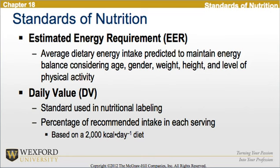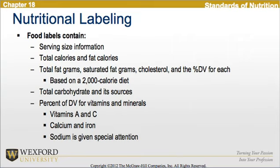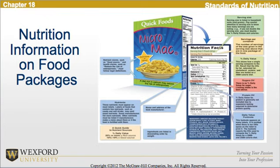Looking at nutritional labeling, food labels contain serving size information, total calories and fat calories, total fat grams, saturated fat grams, cholesterol, and the percentage of the daily value for each based on a 2,000 calorie diet, total carbohydrates and its sources, as well as percent of daily values for vitamins and minerals like vitamins A and C, calcium and iron. Sodium is given special attention. This diagram shows the nutritional information on food packages.